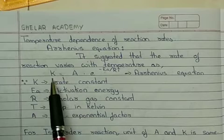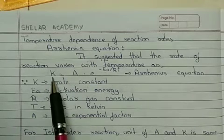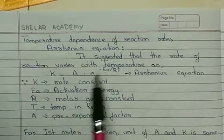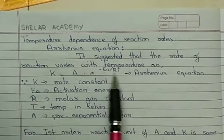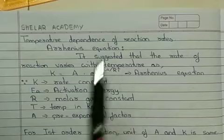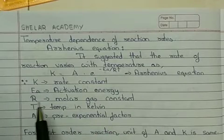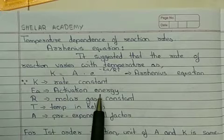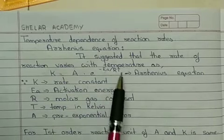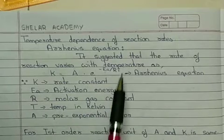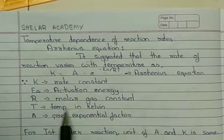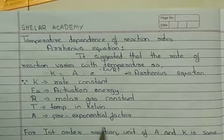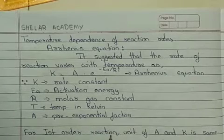This equation explains the correlation between reaction rate (that is, rate constant), pre-exponential factor, activation energy, and temperature. In this expression, K stands for rate constant, Ea stands for activation energy, R is the molar gas constant, T is temperature in Kelvin (that is, absolute temperature), and A is called the pre-exponential factor.